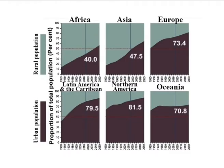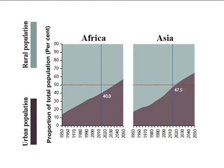Over the coming decades, the level of urbanization is expected to increase in all regions, with Africa and Asia urbanizing faster than the rest. Nevertheless, these two regions, which are projected to reach 56% and 64% urban by mid-century respectively, are still expected to be less urbanized than other regions of the world.